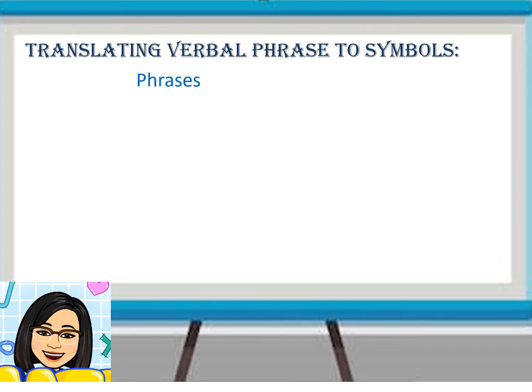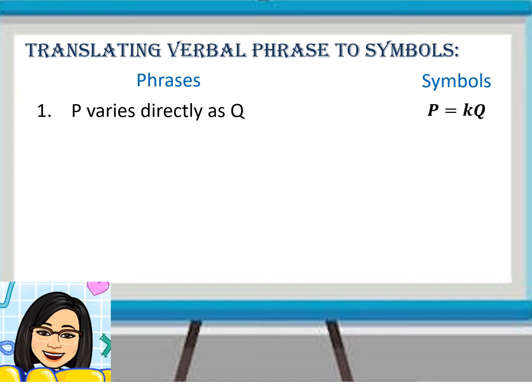Now, before solving problems, it is important to know how to translate verbal phrases into mathematical symbols. Notice: 'varies directly' indicates multiplication. For example, P varies directly as Q. P and Q are the two quantities, and we will use K for the constant of variation. So, it can be written as P is equal to KQ.